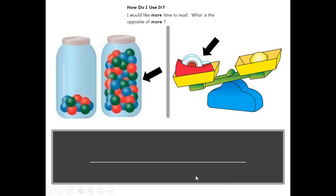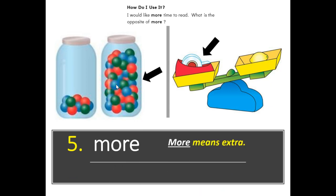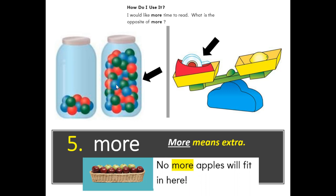What do you notice or see, and how are these both the same or similar? I notice that this jar has much more than this jar, and this tape dispenser weighs more than the lemon, so they both have more in common. The word is more. More means extra. Example: No more apples will fit in here. How do I use it? I would like more time to read. What is the opposite of more? Fewer or less.